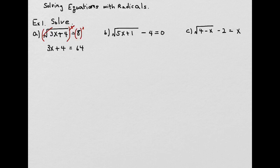To solve the linear equation, we isolate x by subtracting 4 from both sides. Then we get 3x equals 60. Now divide both sides by 3, so x equals 20.